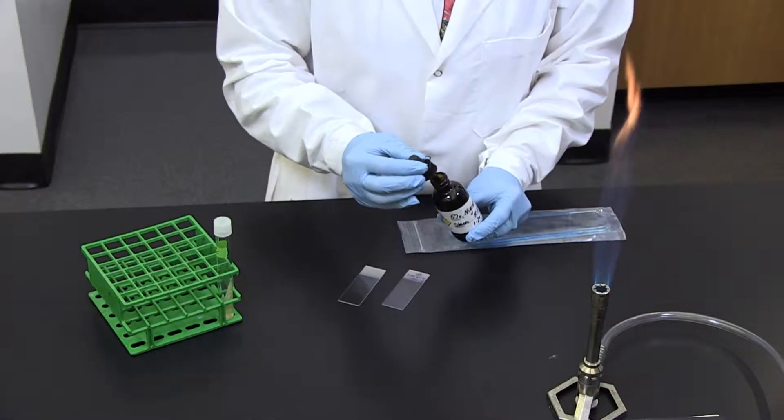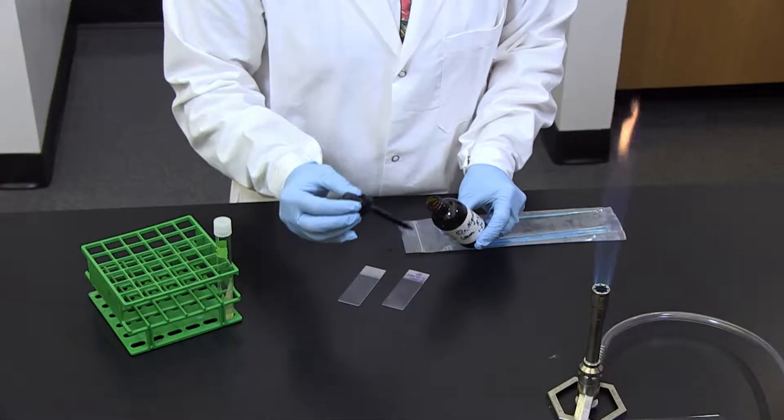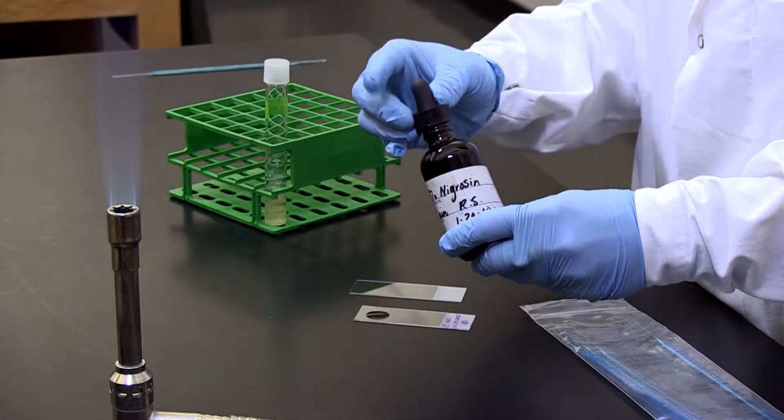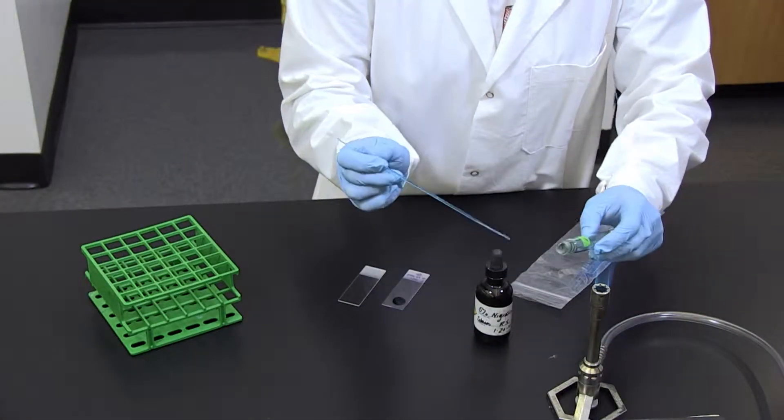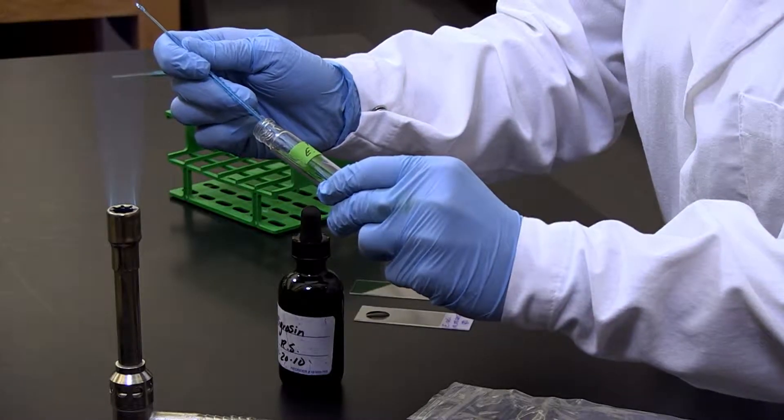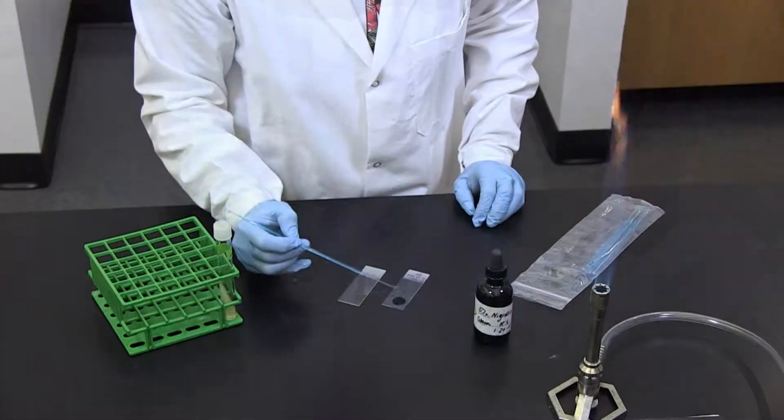To prepare a negative stain: One, place a single drop of nigrosine near one end of a clean microscopic slide. Two, use a needle to disperse a small amount of bacterial cells in the dye.